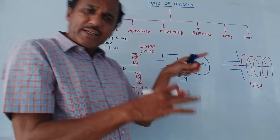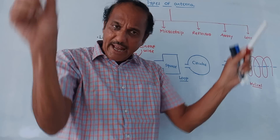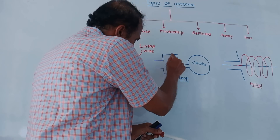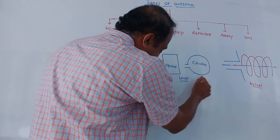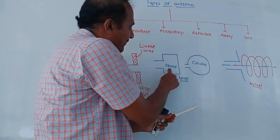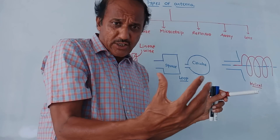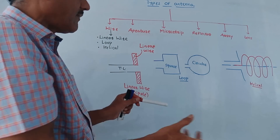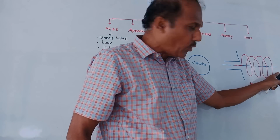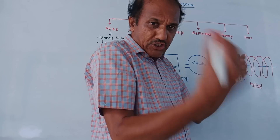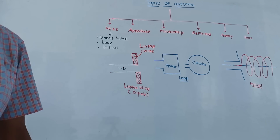Next is the loop antenna. We are talking about single wire antenna, so a single wire is used in the form of a square loop or a circle. There are two subtypes: square loop antenna and circular loop antenna, both manufactured using a single wire. Next is the helical antenna, where a single wire is placed in the form of a helical loop. Sudden changes in the helical structure produce radiation. These are the subtypes of single wire antenna.